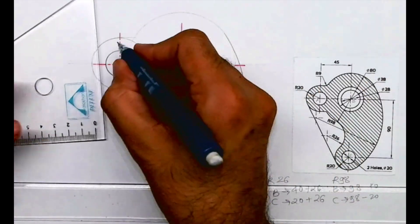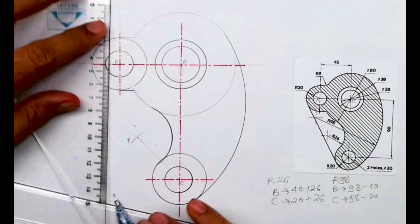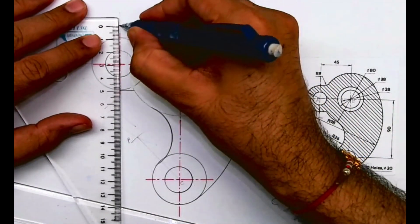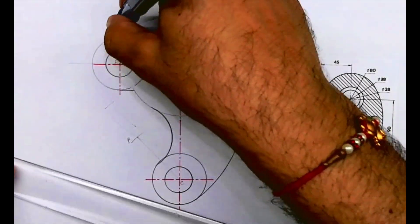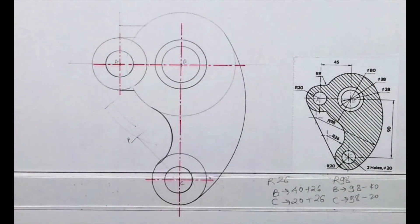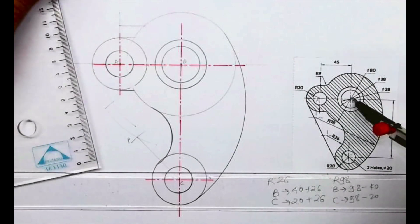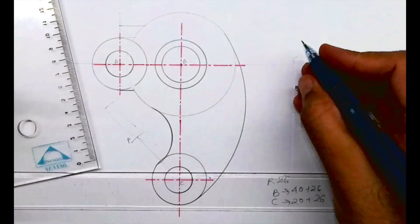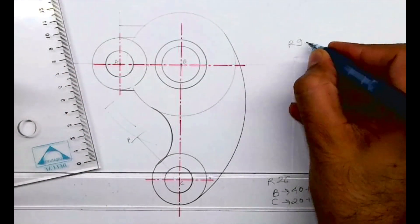But if you see, radius 9 is touching this horizontal line and it is external to that radius 40. So I will take 9 up from here, and I will draw a horizontal line. And from B I will cut 40 plus 9, which is 49.